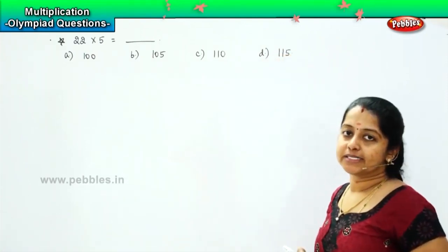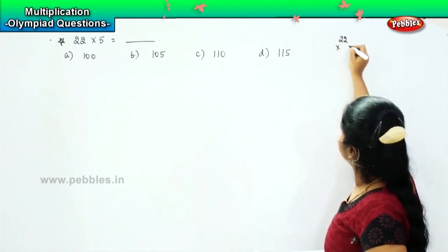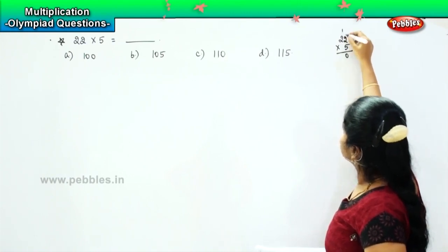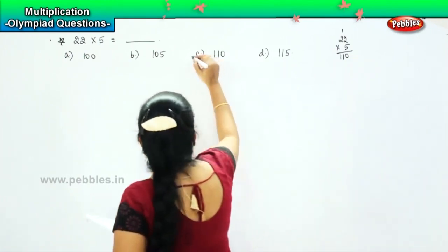So we shall multiply and see what is the right answer. So 22 into 5, so 2 5s are 10, 1, 2 5s are 10, 10 plus 1, 11. So what is your answer? It's 110.